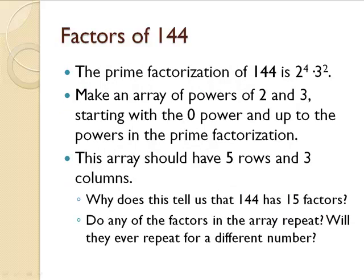The prime factorization of 144 is 2 to the 4th power times 3 squared. So I'd like for you now to make an array of powers of 2 and 3 again starting with the zero power and going up to the powers in the prime factorization. When you get done, you should have 5 rows if you put 2 on the rows and 3 columns if you put 3 at the column headings. Why does this tell us that 144 has 15 factors?